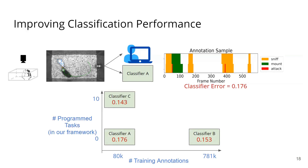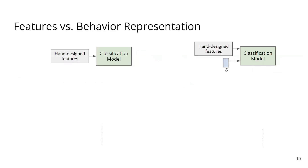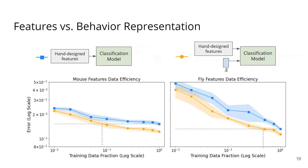Here we see that using our framework, experts can trade off a large amount of annotations for a small number of tasks. Task programming also decreases error for all levels of training data availability. We compare the performance of behavior classifiers with state-of-the-art hand-designed features to those features with TREVA, testing from 1% to 100% of the training data. Our learned representations achieve lower error. In particular, when our representation is used, we have the same error using only 10% of the data on mouse and around 50% of the data on fly, compared to without our representations.